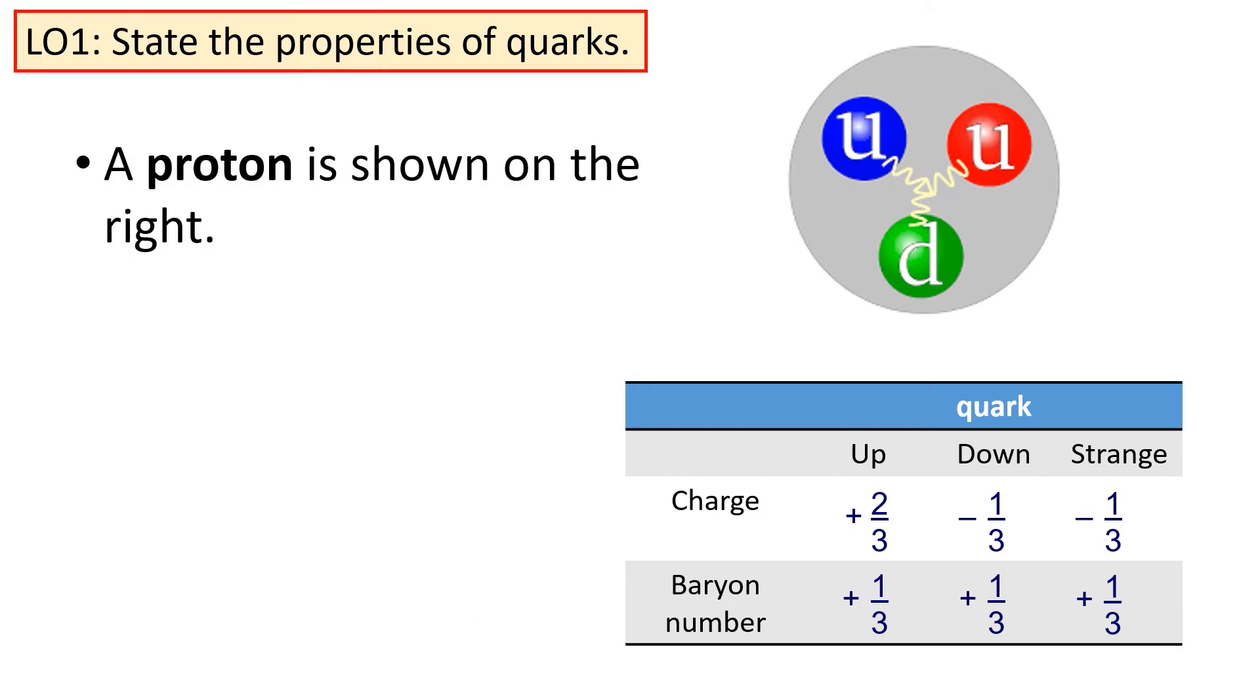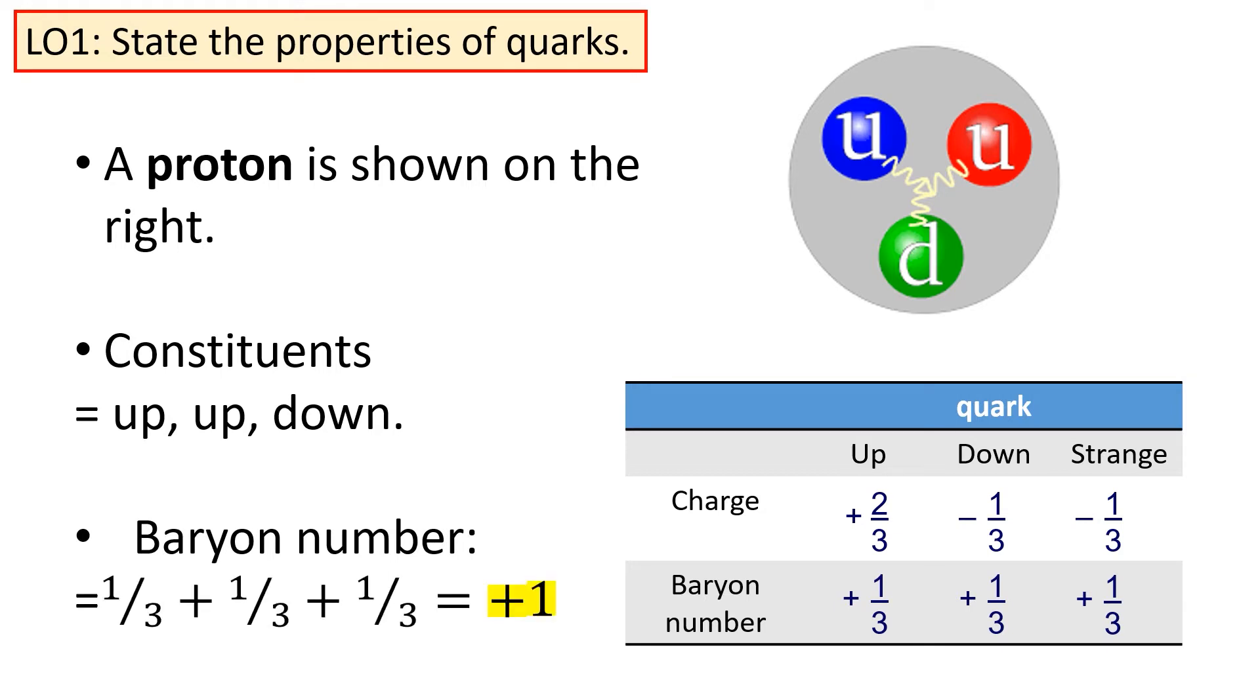As the proton is a baryon, it must have a baryon number of plus one. If again we think about the constituents we've got up, up, down, each of these has a baryon number of plus a third, giving us an overall baryon number of plus one, as expected.